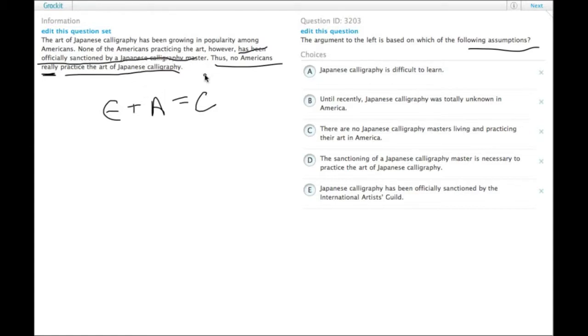That is given as the reason for why no Americans really practice the art of Japanese calligraphy. So the assumption is basically the connection between that statement, the evidence, and the conclusion.